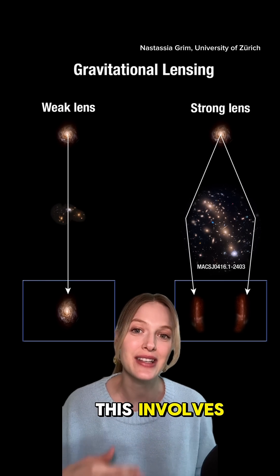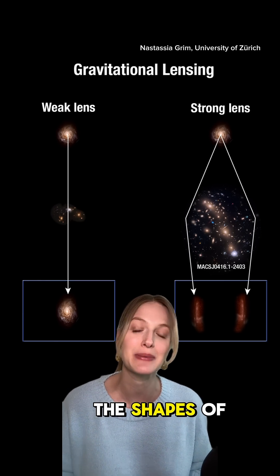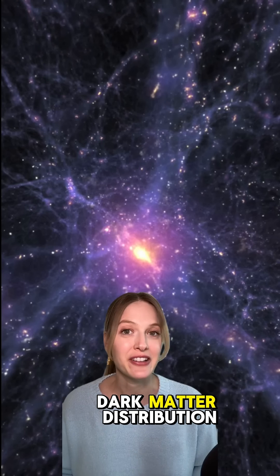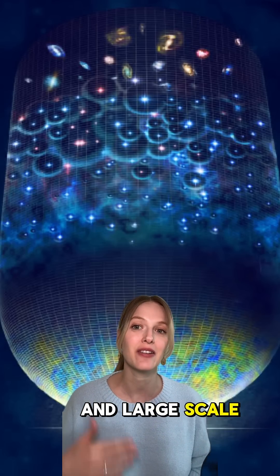Then you have weak lensing. This involves subtle distortions in the shapes of many background galaxies, helping researchers study dark matter distribution and large-scale cosmic structures.